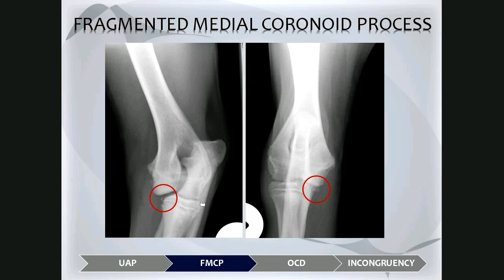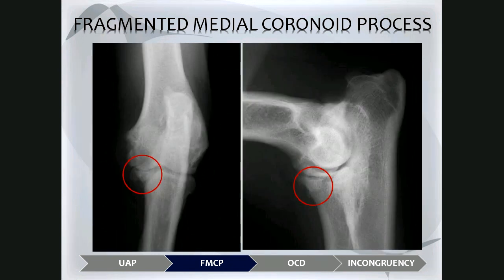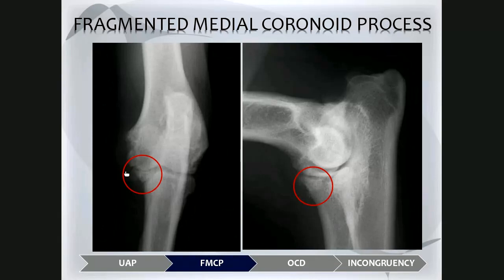Here are more examples. The cranial lateral cordomedial oblique view highlights the medial humeral condyle and medial coronoid process, and there's a small fragment consistent with fragmented medial coronoid process. On the cranial caudal view, one again sees an oval mineralized structure medially consistent with the fragment. Fragments can be very small, but sometimes large. On the medial lateral view, following the medial coronoid process upward, it should be a sharp structure, but here it's blunted with a large triangular mineralized opacity separated from it, consistent with the fragment.